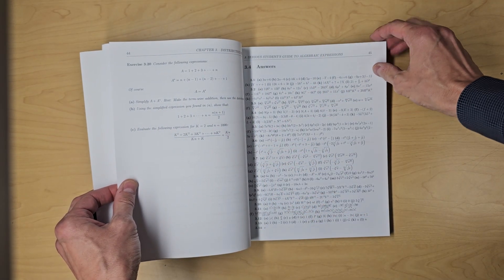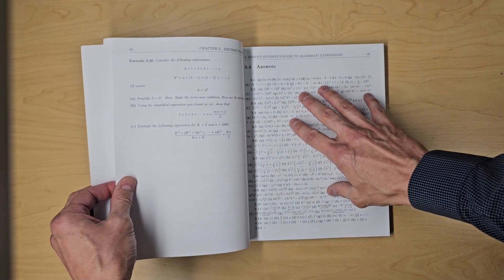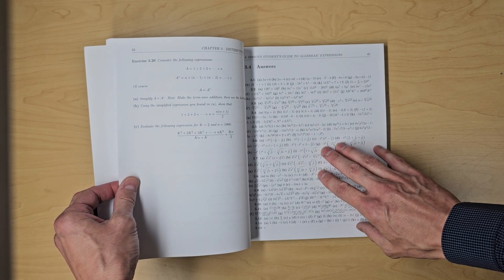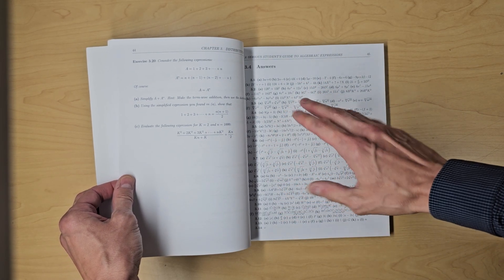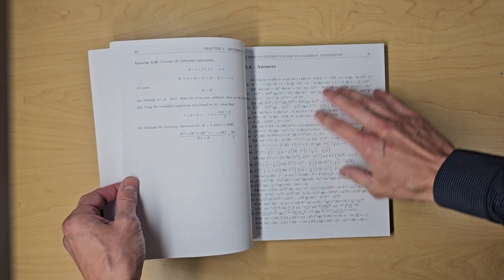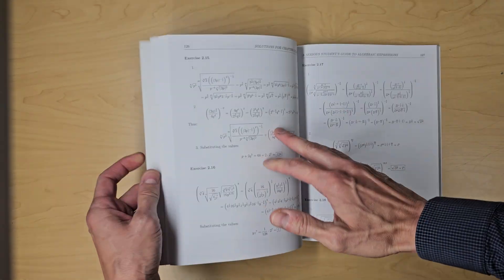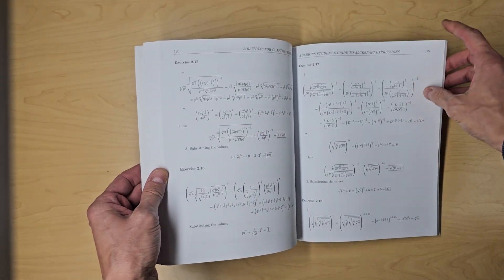There are answers at the end of every chapter—short answers where students can check if their solution is correct. If the answer is not enough, there are also full solutions at the end of the book.